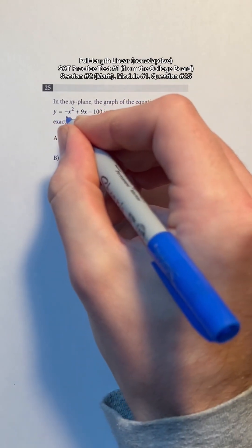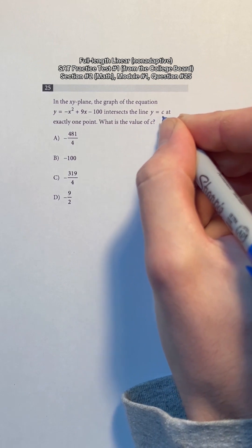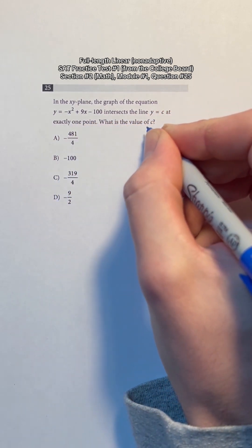In the xy-plane, the graph of the equation y equals negative x squared plus 9x minus 100 intersects the line y equals c at exactly one point. What is the value of c?